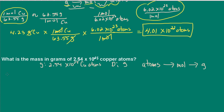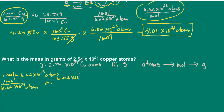From atoms to moles, I have the equivalence that 1 mole is 6.02 times 10 to the 23 atoms, giving me my conversion factors. Then from moles to grams, I know that 1 mole of copper equals 63.55 grams, and I can write out that conversion factor as well.